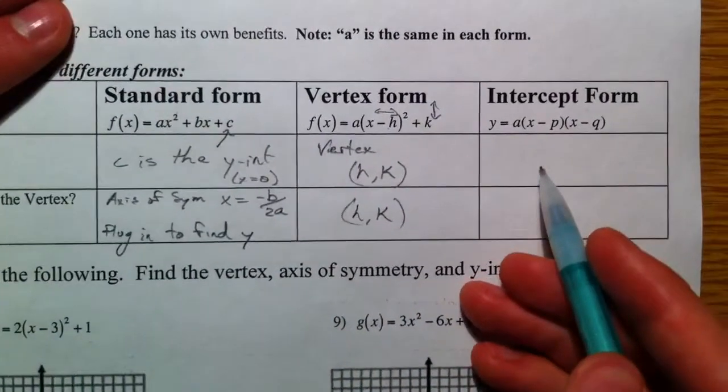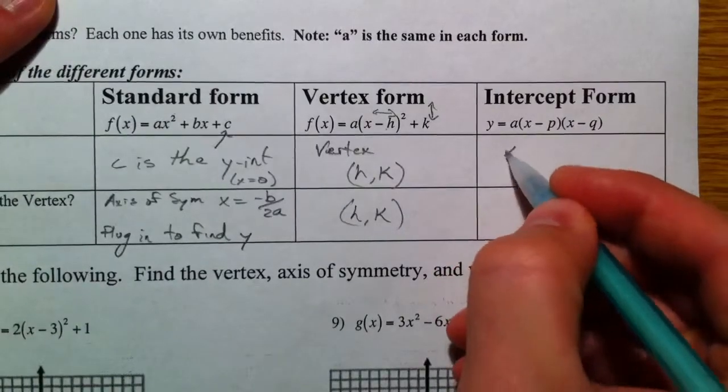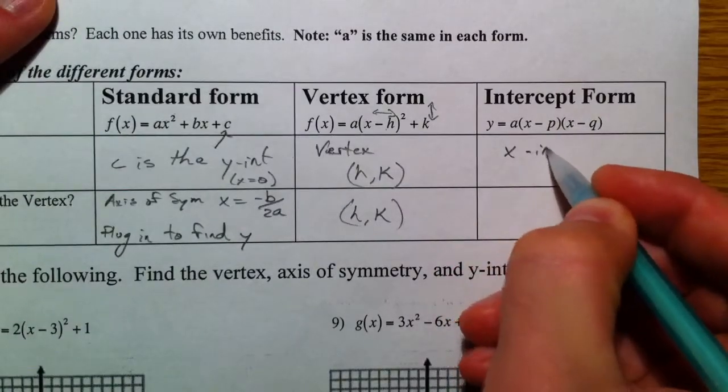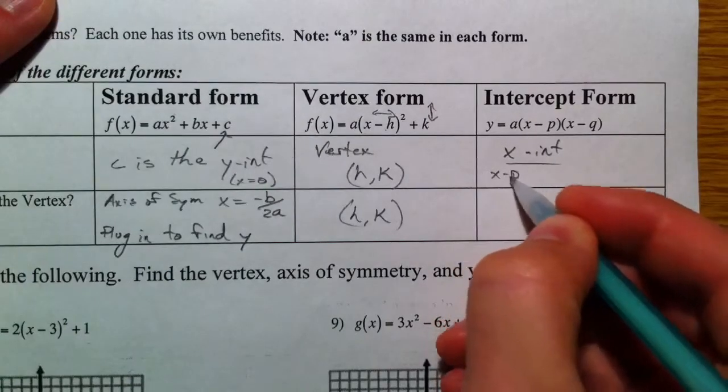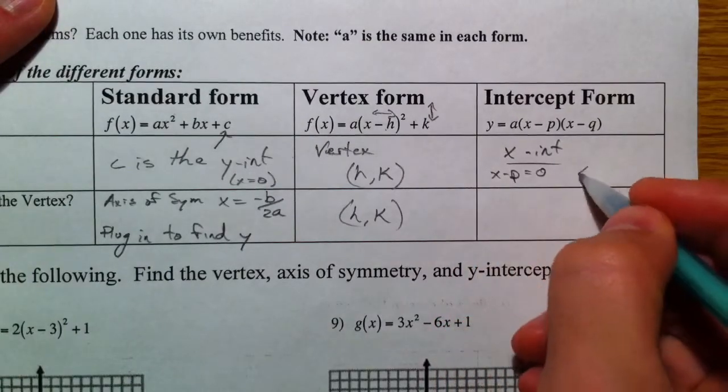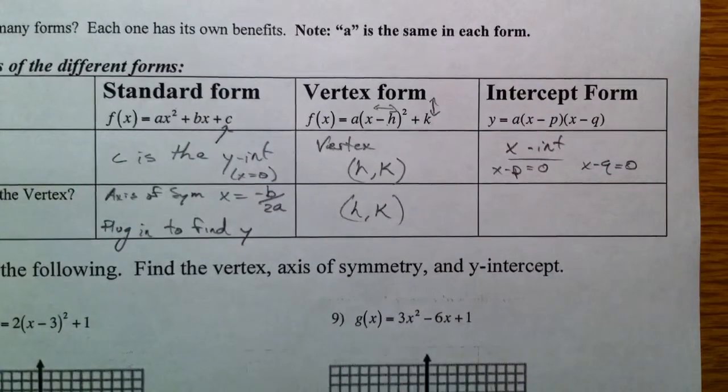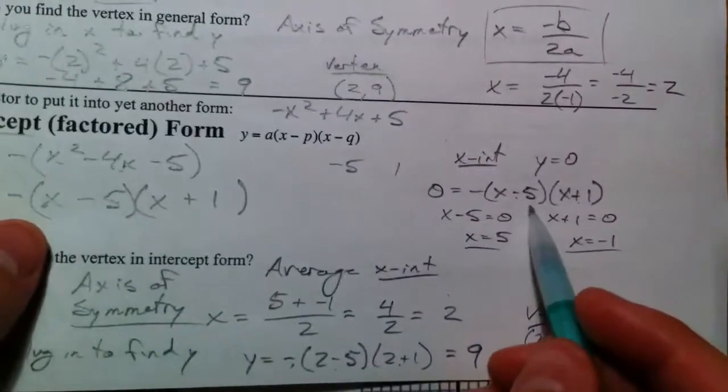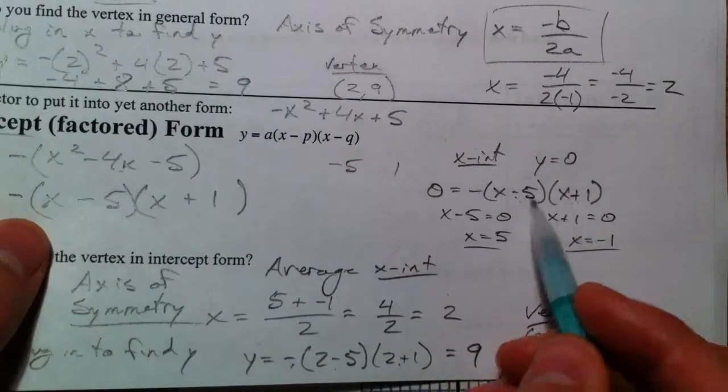Intercept form. The benefit? x-intercepts. Set x minus p equal to 0, x minus q equal to 0. And you get what we had. So on this last one, 5 was an x-intercept and negative 1 was an x-intercept. The opposite and the opposite.